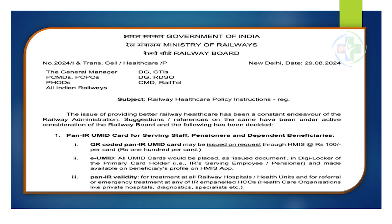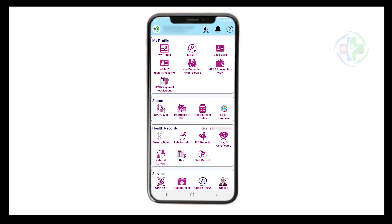This card is especially helpful in emergencies as it allows treatment at all railway hospitals as well as private and paneled hospitals without prior referral approval from a railway hospital in case of emergencies. Let's start the step-by-step process to generate the EUMIT digital card.